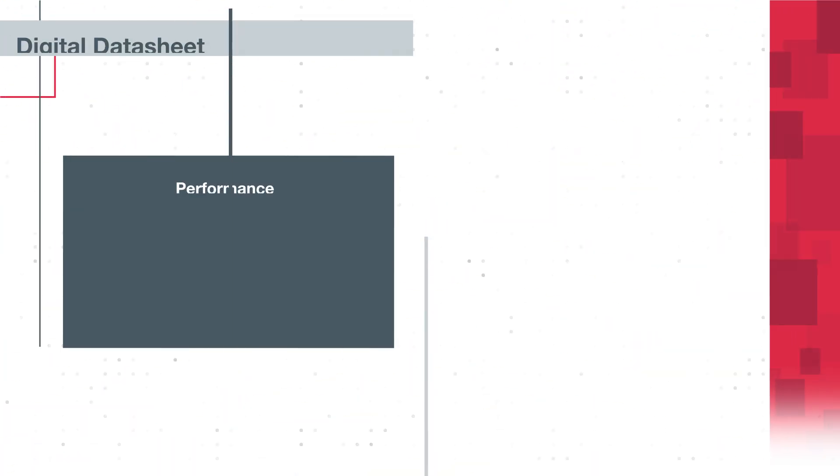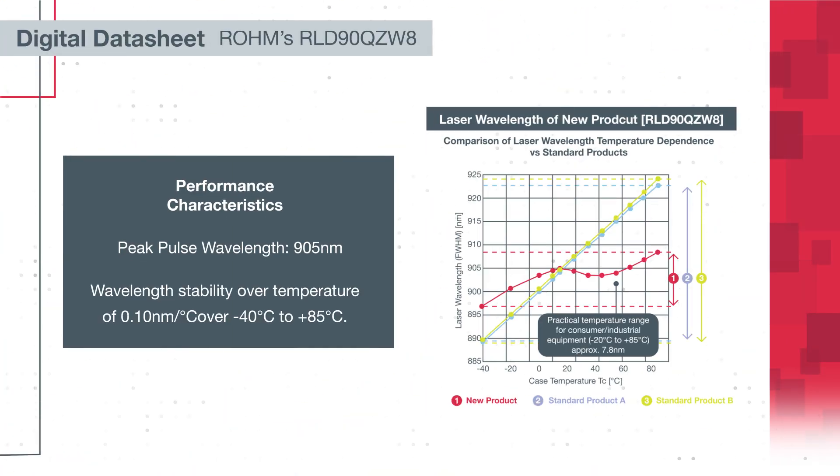With the peak pulse wavelength centered at 905 nanometers, the diodes have best-in-the-industry wavelength stability over temperature with only 0.10 nanometers per degree Celsius over negative 40 degrees Celsius to plus 85 degrees Celsius.